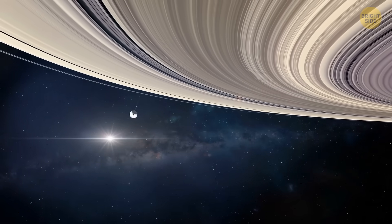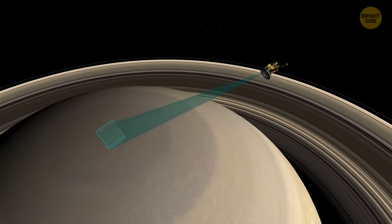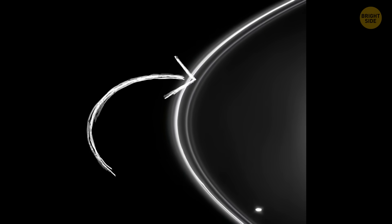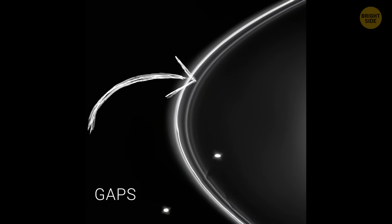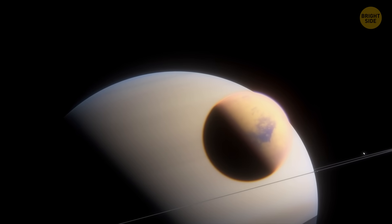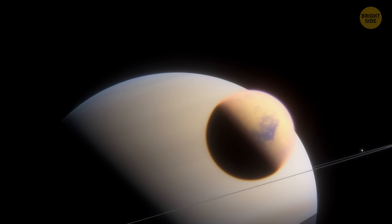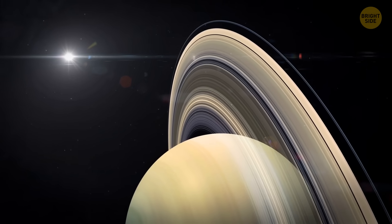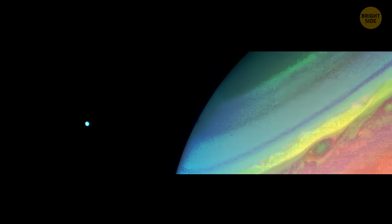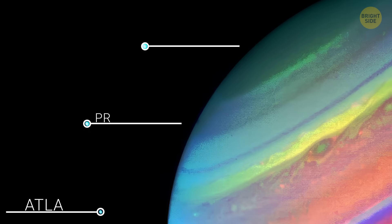Next the spacecraft flew past Saturn. They measured the planet's atmosphere and studied its famous rings, discovering gaps and waves we still see today. Voyager 1 looked through Titan's thick haze and suggested that the moon might have liquid hydrocarbons on its surface. It was later confirmed by other missions. Voyager 1 also found 3 new moons orbiting Saturn – Atlas, Prometheus, and Pandora.